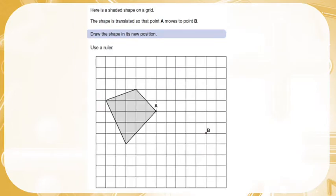Question number two: Here is a shaded shape on a grid. The shape is translated so that point A moves to point B. Draw the new shape in its new position. Now this one's nice and easy. You don't have to really worry too much about the translation because it has told you where it's moving to.